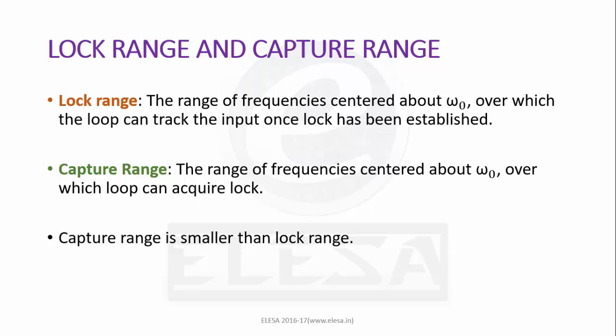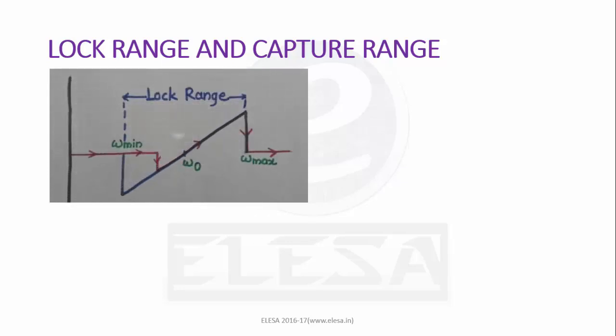Lock range - that is the range of frequencies centered about ω_0 which is free running frequency, over which the loop can track the input once lock has been established. That is the range of frequencies from ω_min to ω_max where the locked PLL remains in locked condition. If the PLL is initially locked and if ω_input is less than ω_min or ω_input is greater than ω_max, then PLL becomes unlocked. When PLL is unlocked, VCO oscillates at frequency ω_0 which is called free running frequency.